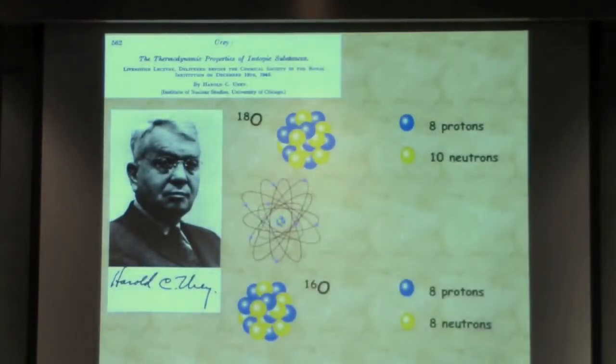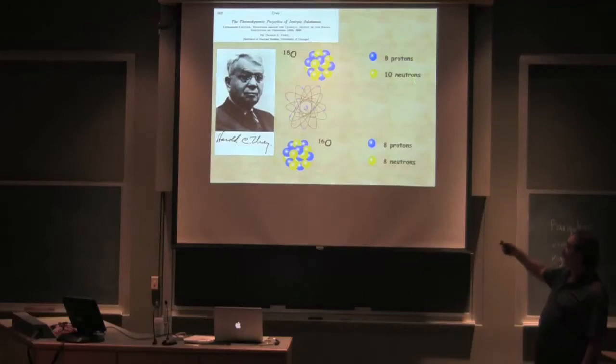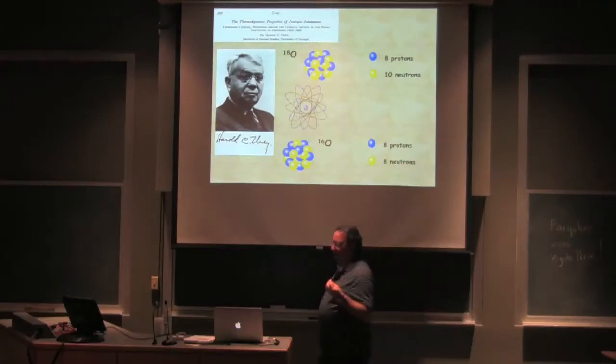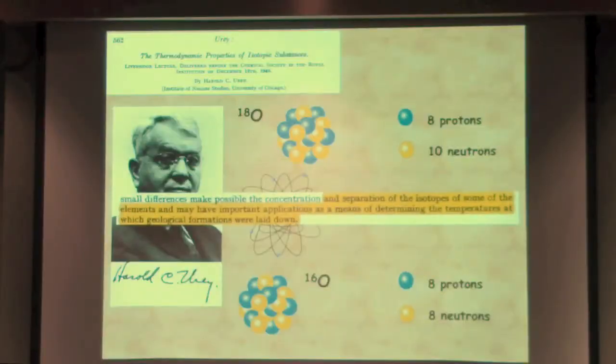What Harold argued in the very first paper that he published in 1947 was that if you take a look at the geochemistry of something like oxygen and you look at the stable isotopic ratio of the light isotope, which has eight protons and eight neutrons, and the heavy isotope, which has ten neutrons, the differences in that ratio should reflect the temperature of the minerals such as calcium carbonate or silicates at their formation temperature. In his paper, he basically said that if we can separate the isotopes, they may have important applications as a means of determining temperatures at which geological formations were laid down. This is the start of geochemistry.